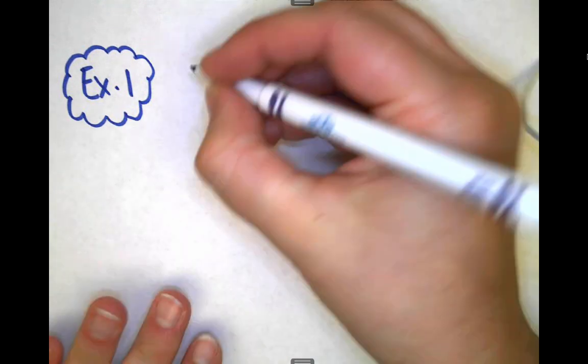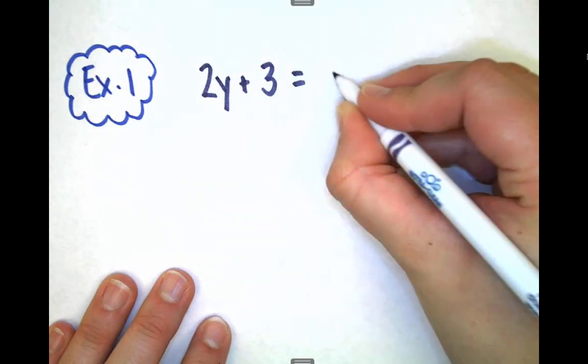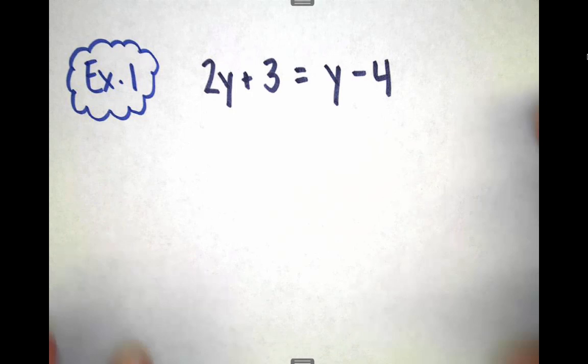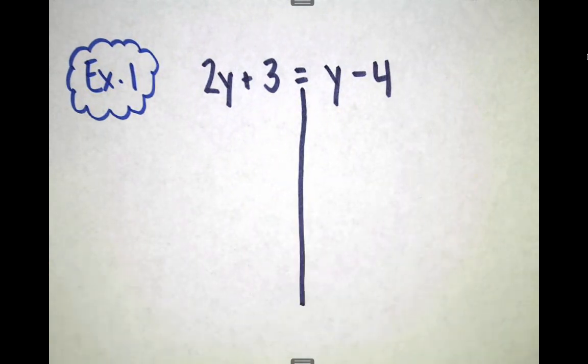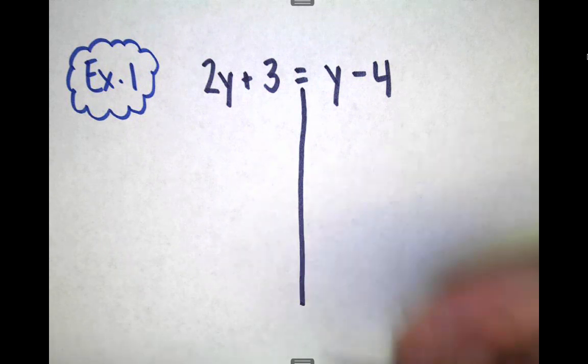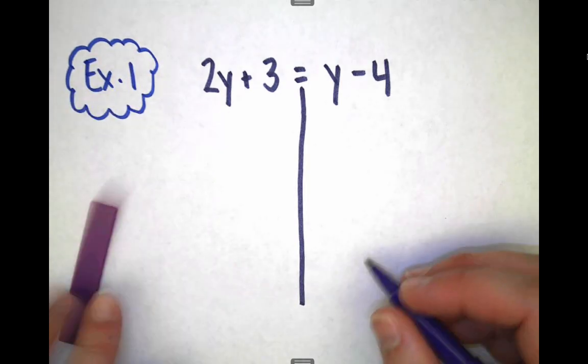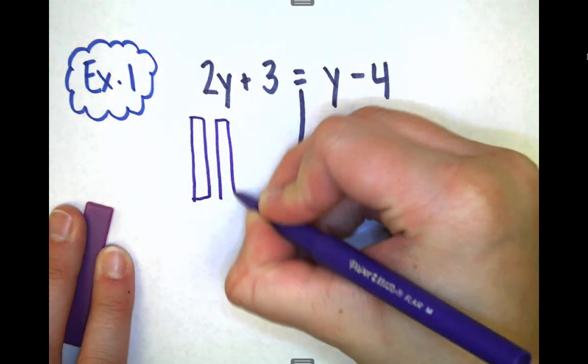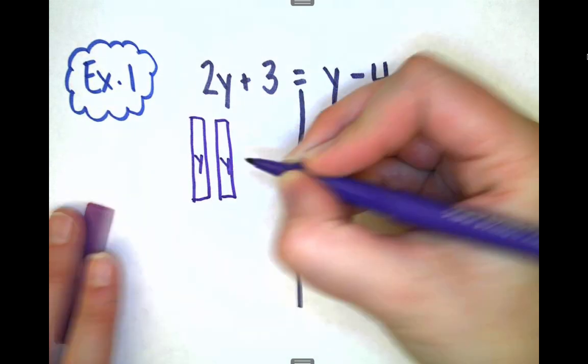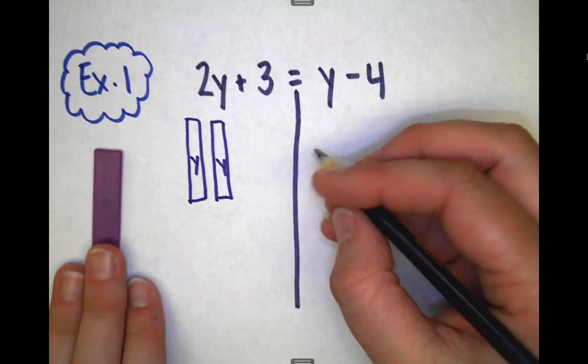Okay, so here is our problem. We're going to solve 2y + 3 = y - 4. Looks like we're trying to solve for y. I'm going to put that line down the equal sign, split this problem into a left and a right side. Then I'm going to start drawing my tiles. I have two y's. The y's are those long purple ones. I'm going to draw two of them.